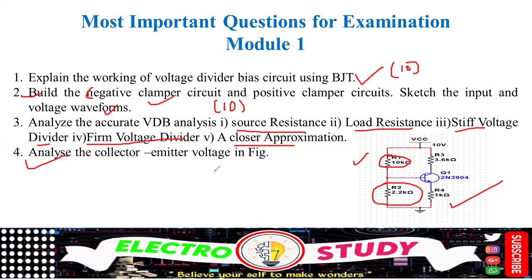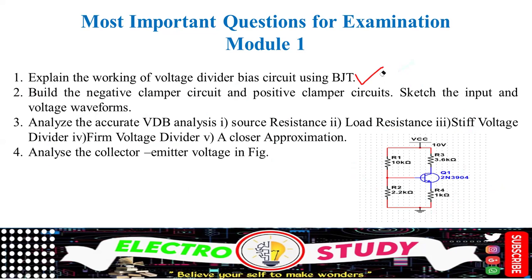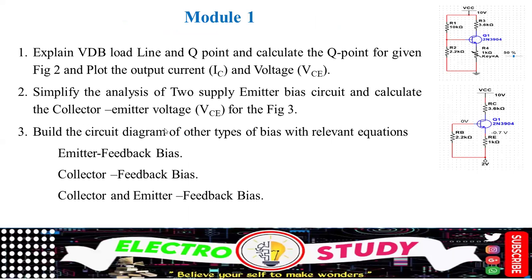Then analyze the collector-emitter voltage shown in the figure. Refer the particular figure shown in figure 1. Explain VDB load line and Q point, and calculate the Q point for the given figure 2, and plot the output current IC versus VCE. You should have a good idea about the shape of the IC versus VCE output graph — IC means collector current, output current versus collector-emitter voltage. Next, simplify the analysis of a two-supply emitter bias circuit and calculate the collector-emitter voltage shown in figure 3.